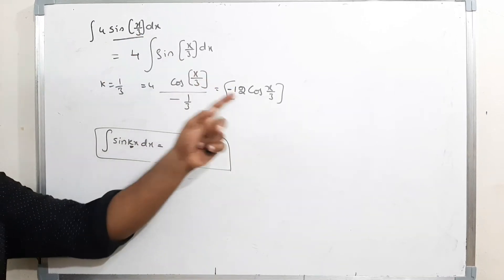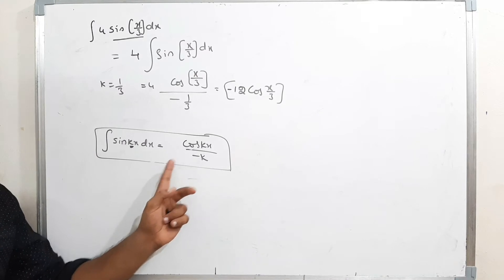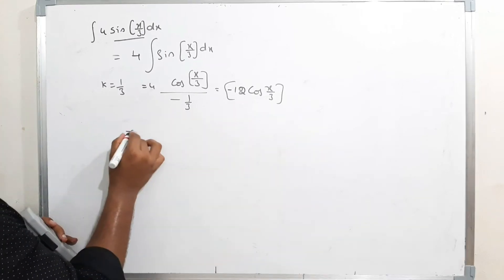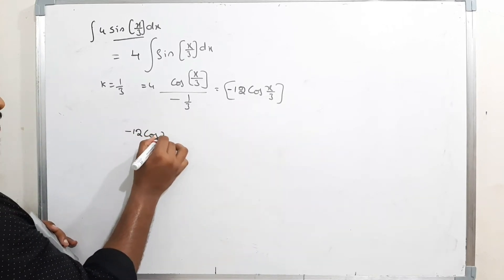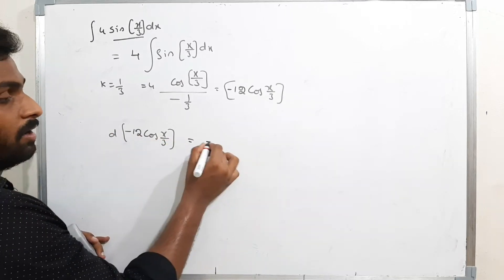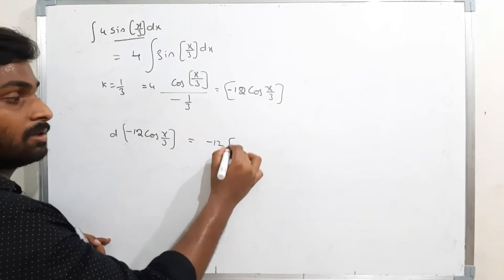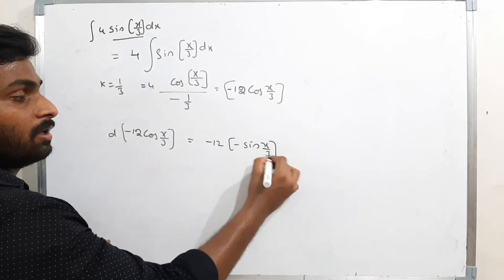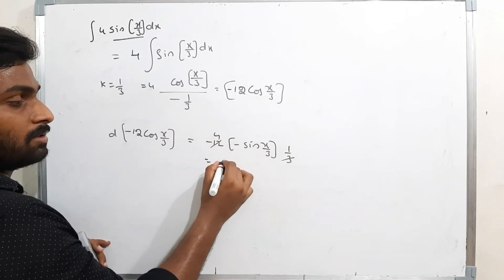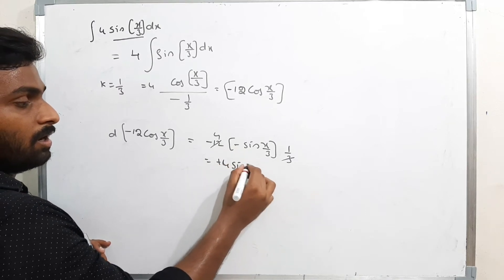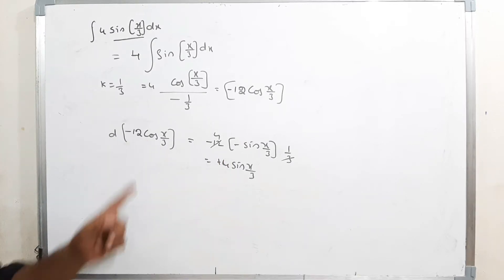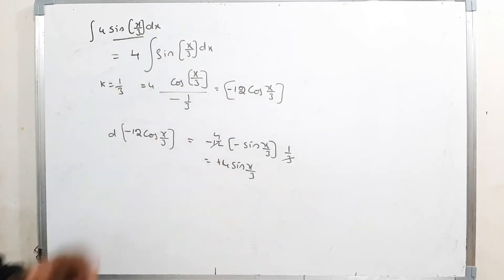To solve integration problems you must be thorough with differentiation. If I differentiate -12cos(x/3), I get -12 times (-sin(x/3)) times (1/3), giving 4·sin(x/3) — the original expression. So the results verify each other.